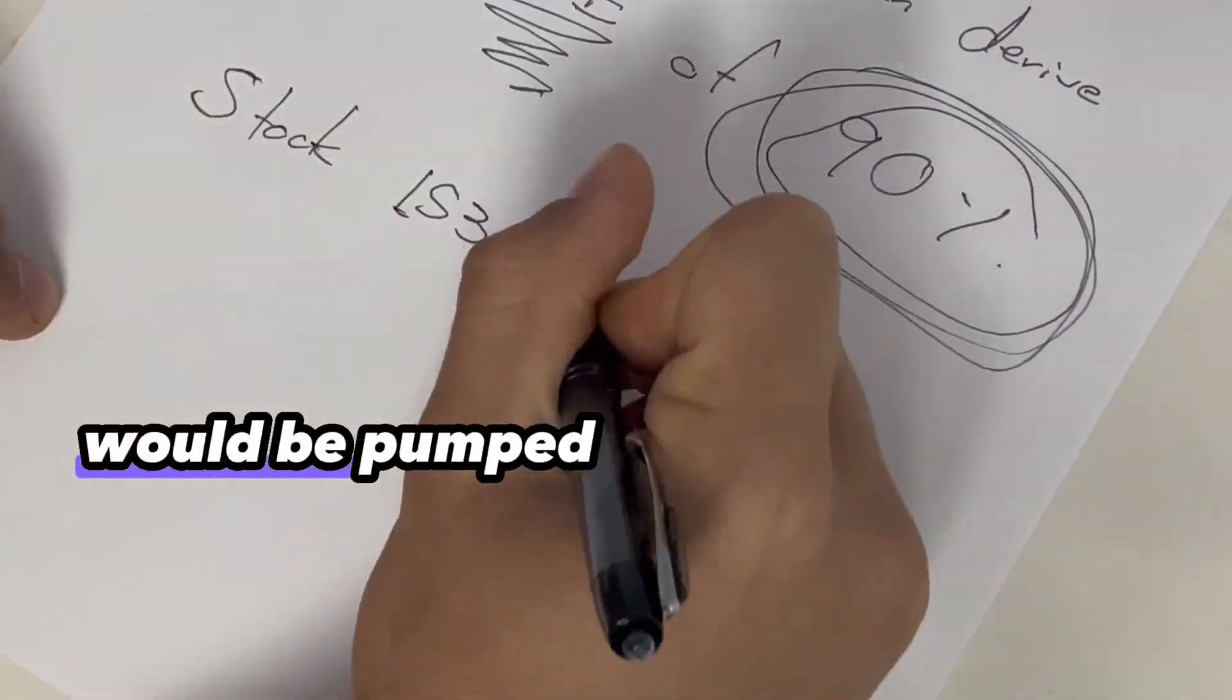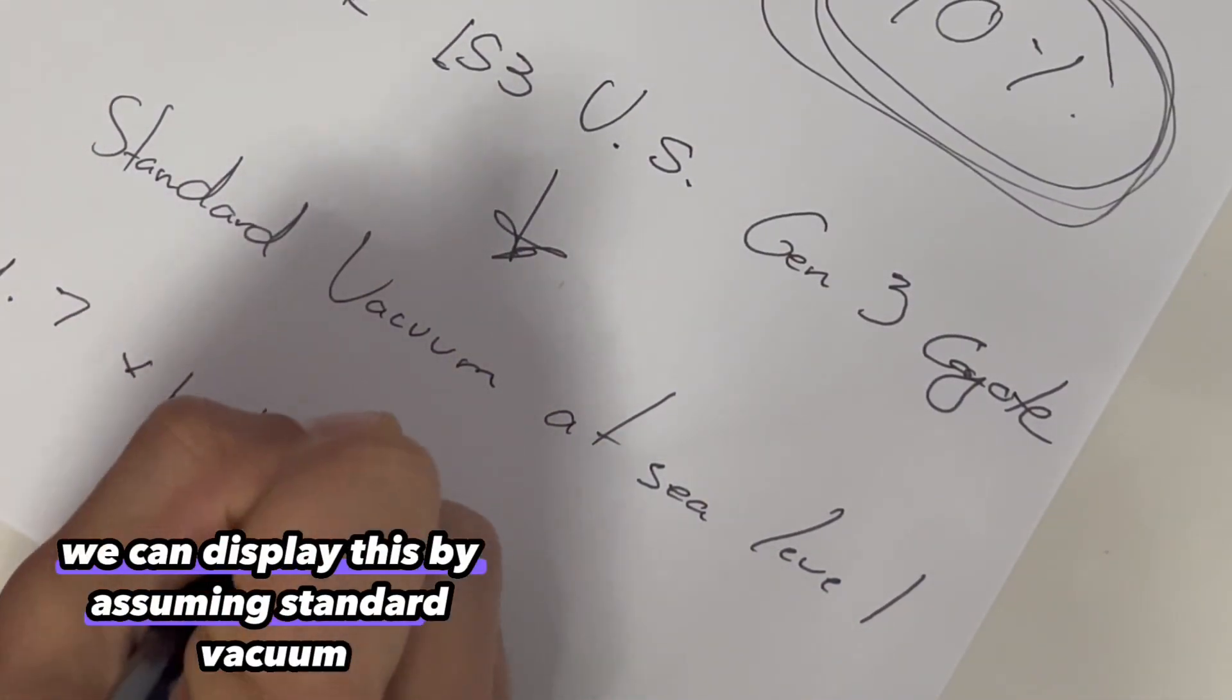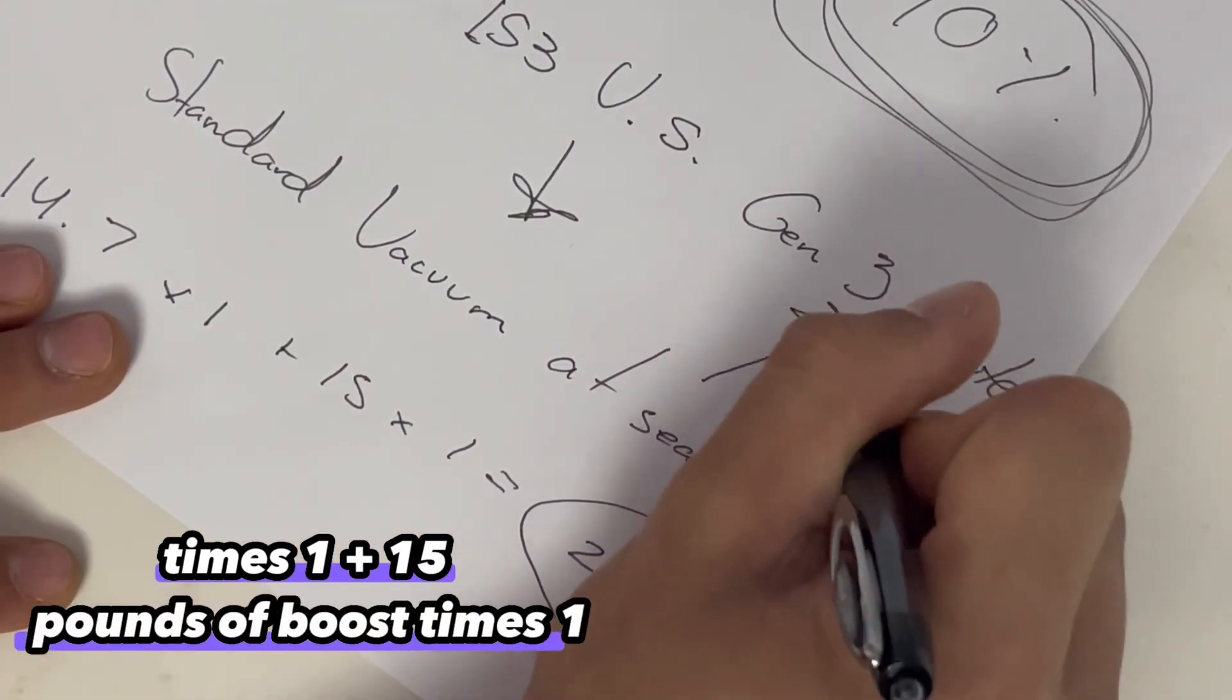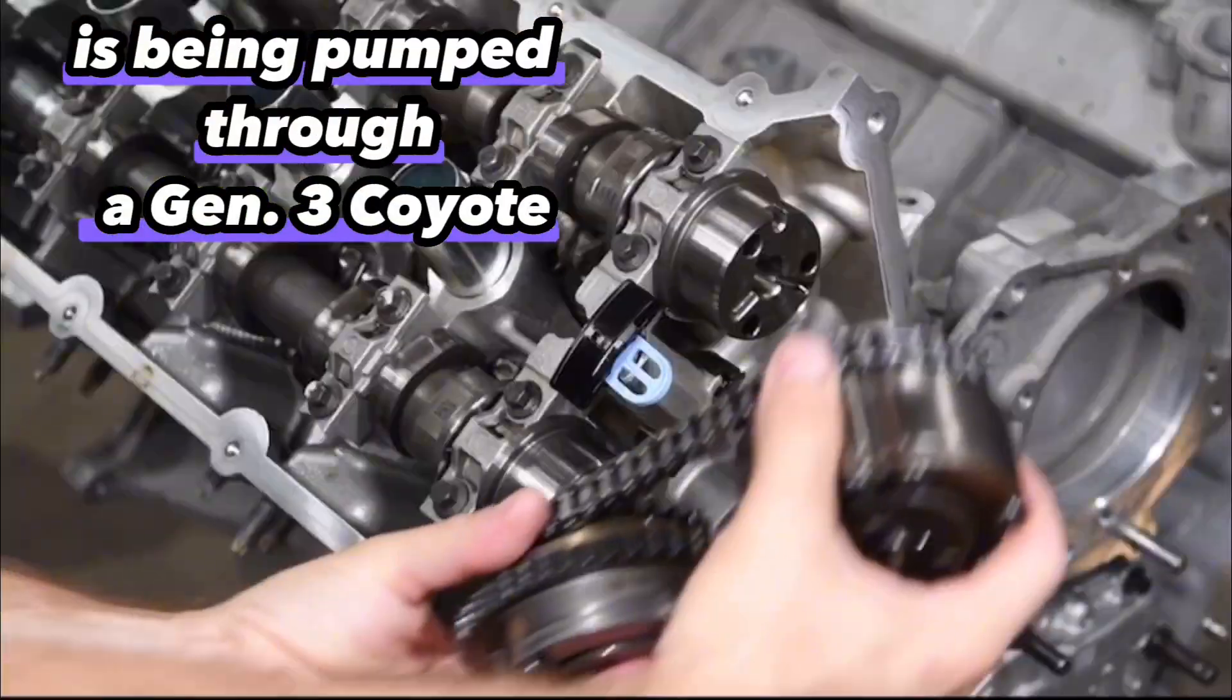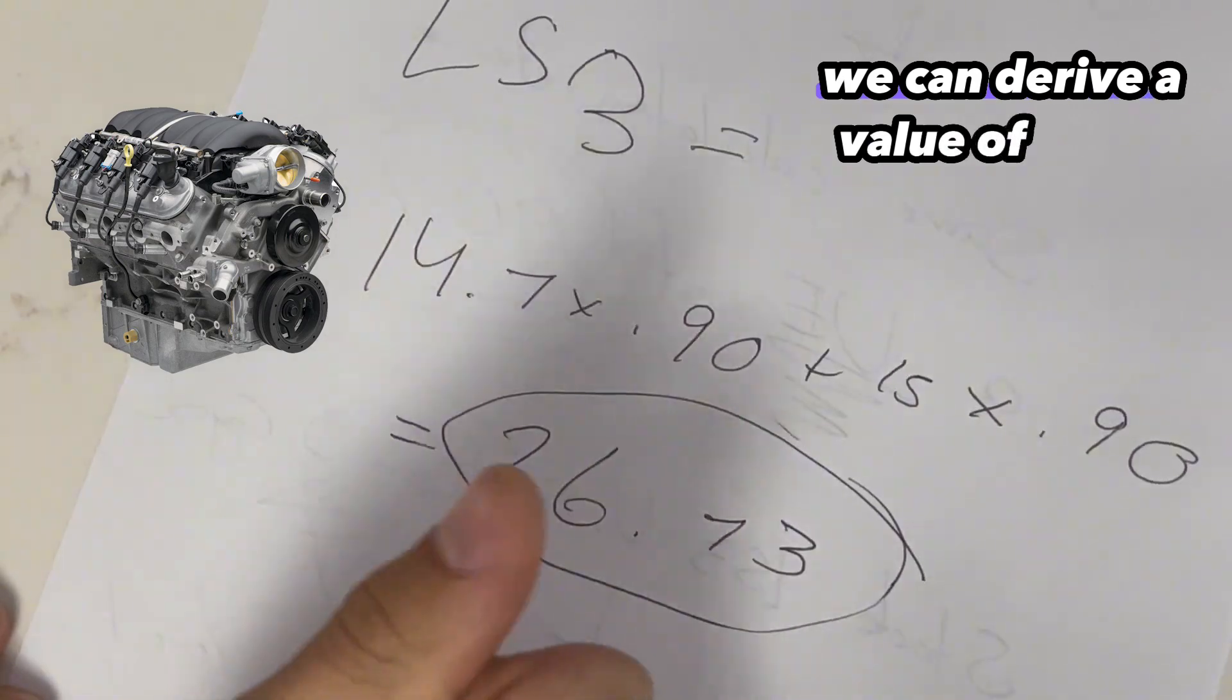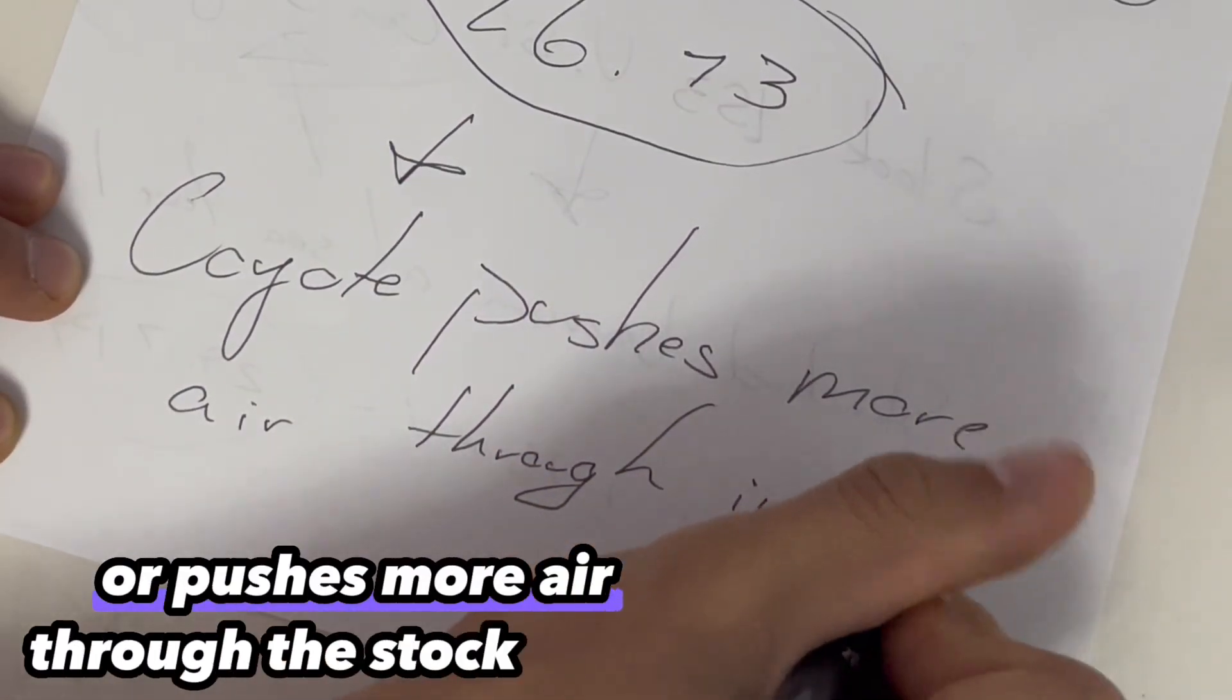So we can display this by assuming standard vacuum at sea level, which is 14.7. We're going to multiply this for the Gen 3 Coyote times one plus 15 pounds of boost times one. So a total of 29.7 PSI is being pumped through a Gen 3 Coyote, assuming standard vacuum and 15 pounds of boost. Doing the same exact calculation for an LS3 with 15 pounds of boost, we can derive a value of 26.73, implicating that the Coyote does in fact make in total more boost or pushes more air through the stock motor.